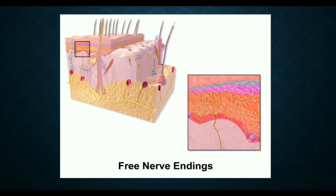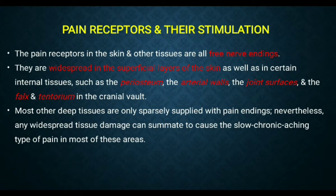The free nerve ending receptors are pain receptors in the skin. Pain receptors are mainly free endings found in the superficial layers of the skin. Internal tissues also have free nerve ending pain receptors, such as in the periosteum, arterial walls, joint surfaces, and falx and tentorium in the cranial area. Pain receptors are present throughout deep tissues as well.